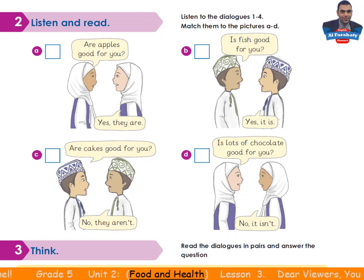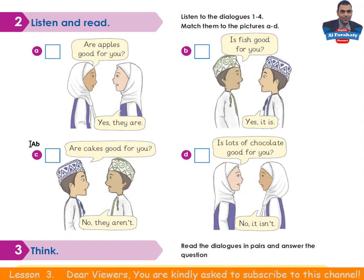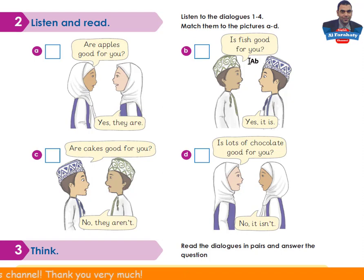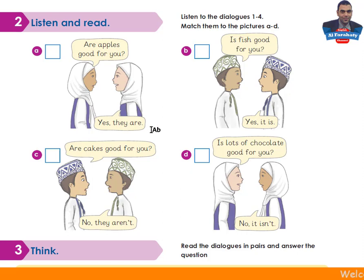Dialogue 1: Are cakes good for you? No, they aren't. Dialogue 2: Is fish good for you? Yes, it is. Dialogue 3: Are apples good for you? Yes, they are. Dialogue 4: Is lots of chocolate good for you? No, it isn't.